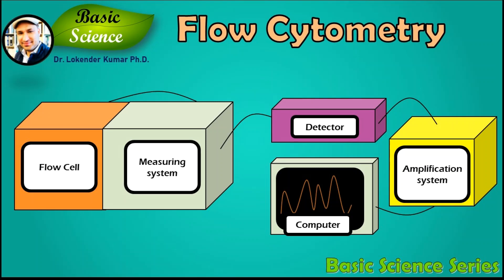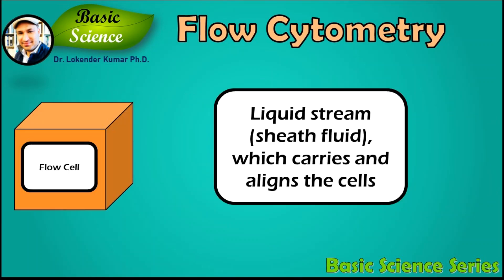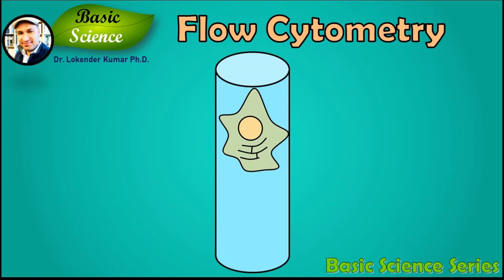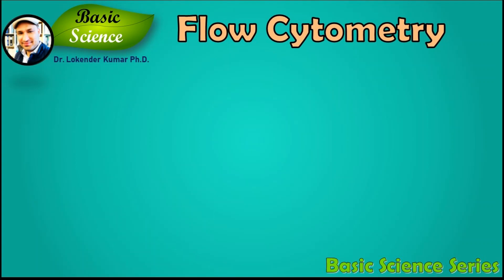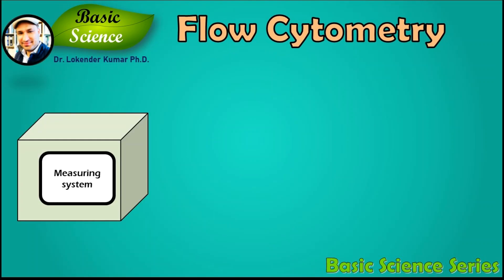The flow cell has a liquid stream called sheath fluid, which carries and aligns the cells so that they pass as a single file through the light beam for sensing. The measuring system commonly uses measurement of impedance or conductivity.